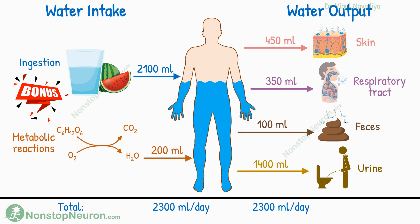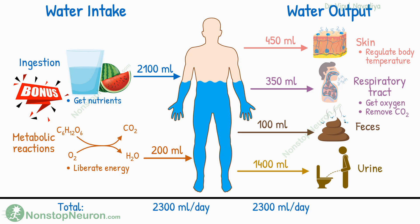Although there are many routes for water intake and output, not all are regulated for the purpose of water balance — the primary purpose of most of them is actually different. Taking food is primarily concerned with getting nutrients. Oxidation of foodstuff happens primarily to liberate energy. Sweating is concerned with regulation of body temperature, and breathing is mainly to get oxygen and remove carbon dioxide.